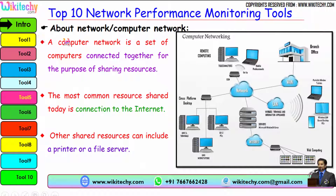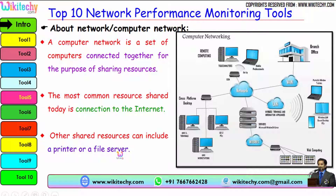First, we should understand what a network is. A network is nothing but the interconnection of computers. A computer network is a set of computers connected together for the purpose of sharing their resources. The most common resource shared today is the connection to the internet. Other shared resources can include a printer or a file server to access data.